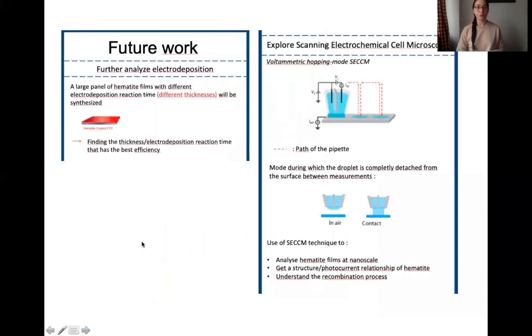For future work, I'm going to work on a larger panel of hematite with different electrodeposition times and I'm also going to explore the scanning electrochemical cell microscopy to get, as we said earlier, analysis at micro or nanoscale and to get a better understanding of the recombination process.